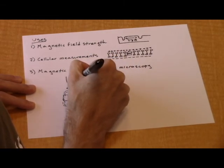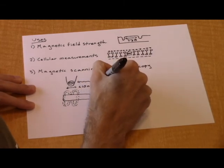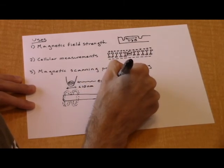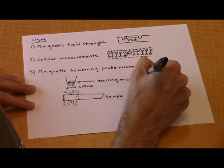By scanning this tip across a magnetic sample, the change in ODMR frequency readout would allow researchers to map with high spatial precision the magnetic field of some sample.